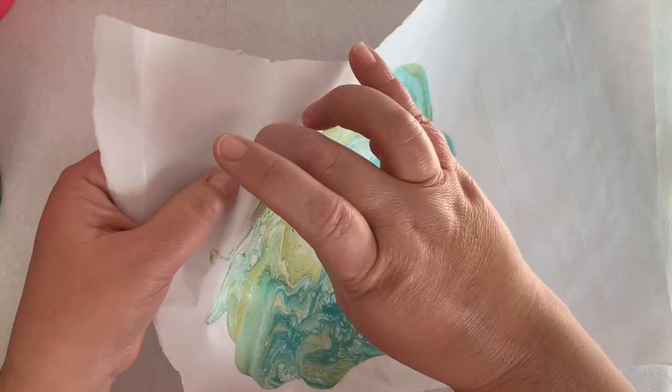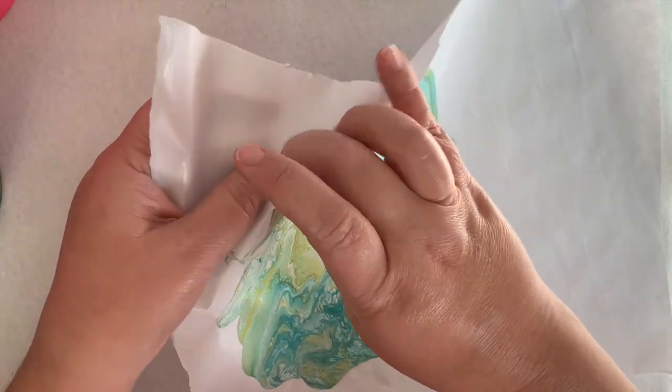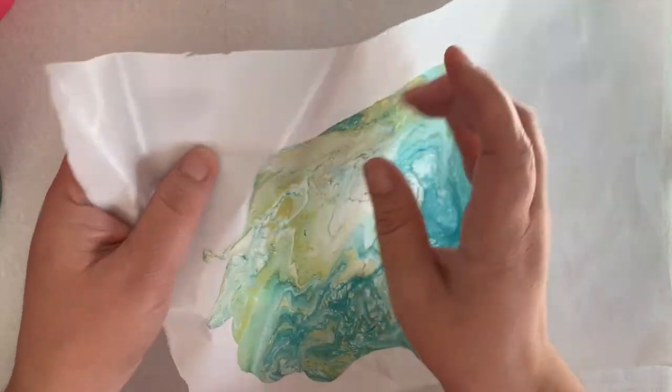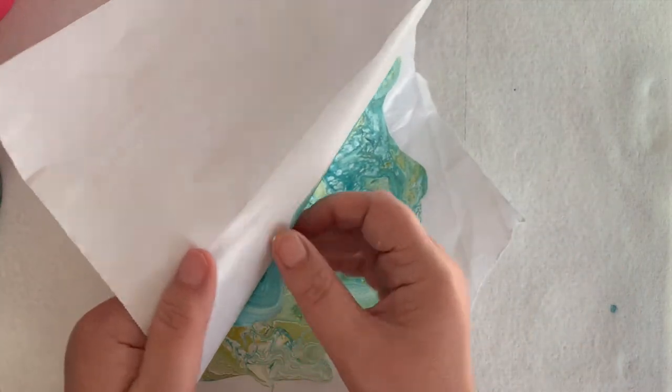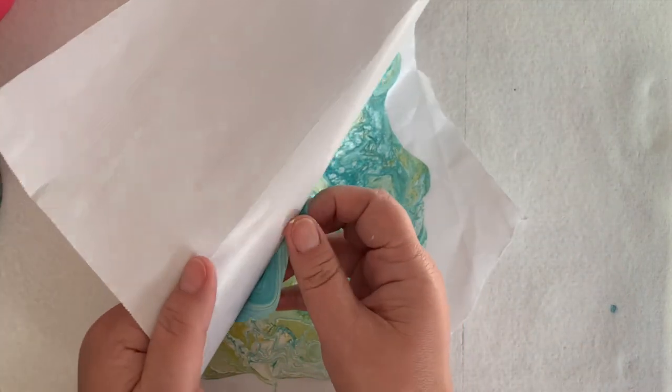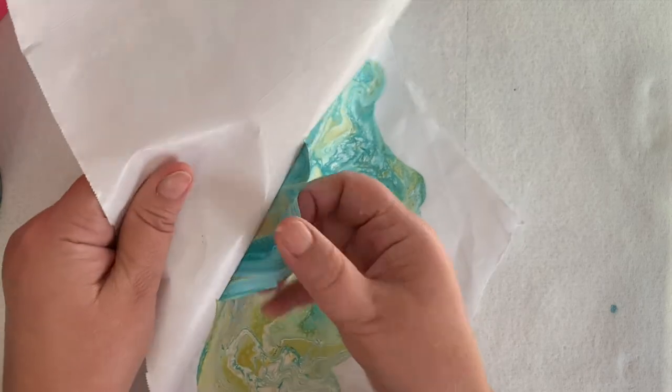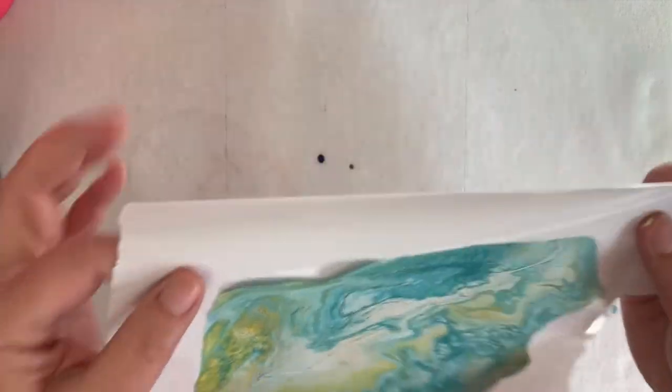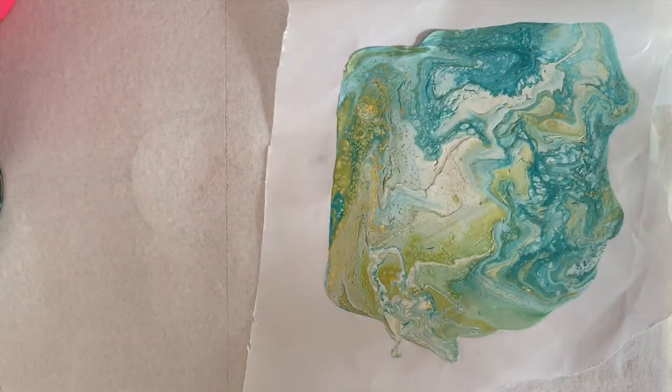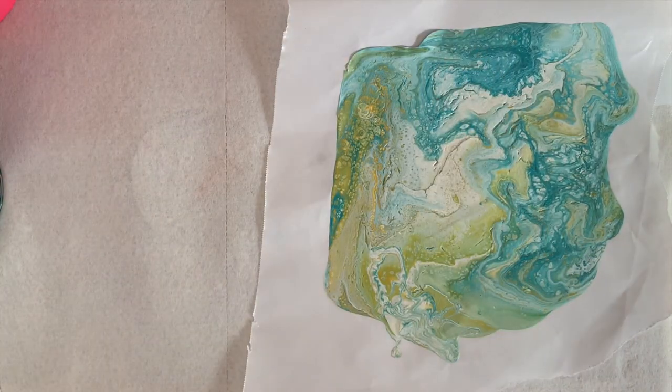Once it's completely dried you'll be able to peel it off from the freezer paper. Now you do have to be careful because the paint will rip, it's pretty delicate, but you'll see in a minute I find a corner to start peeling it away from the freezer paper. Now I like to cut my shapes out while it's still on the freezer paper so that's why you'll see that I don't tear very much of this off. I just peel it back a little, put it back.